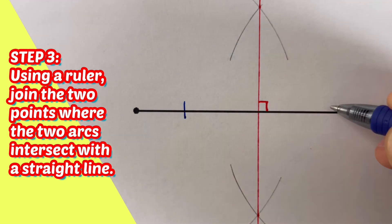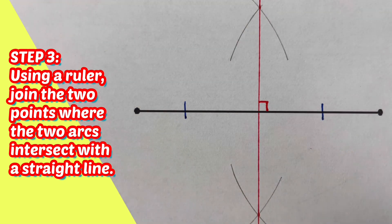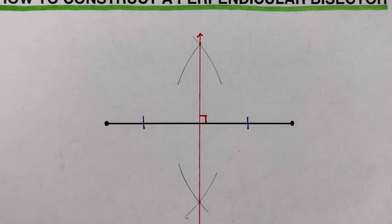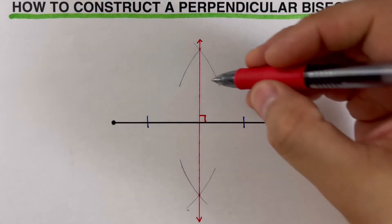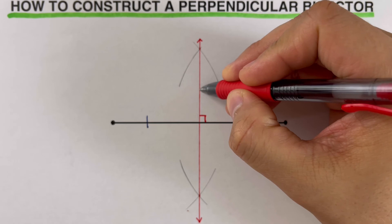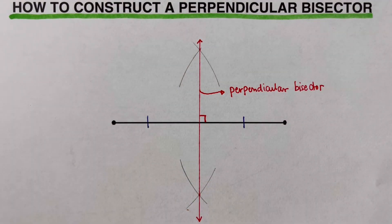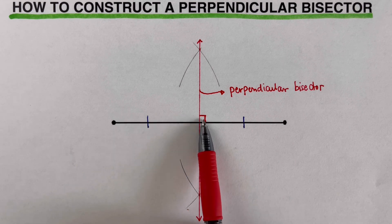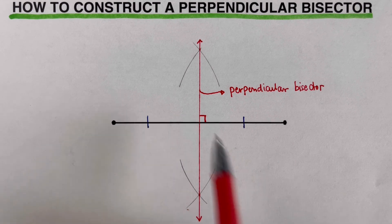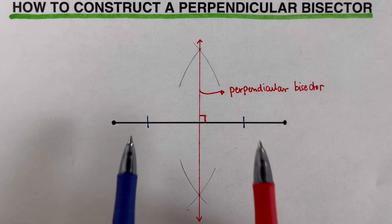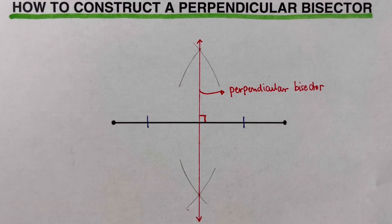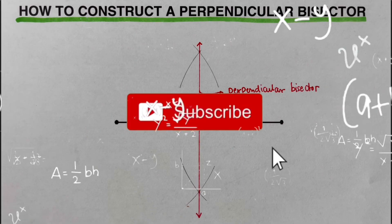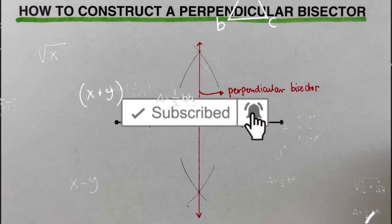I can label the two segments as congruent to each other and label this as the perpendicular bisector. Again, both conditions are met: it forms 90-degree angles with the line segment, and the line segment is cut into two equal pieces. That is how you construct a perpendicular bisector using a compass and a ruler. If you found this video helpful, hit like and subscribe for more math videos. See ya!